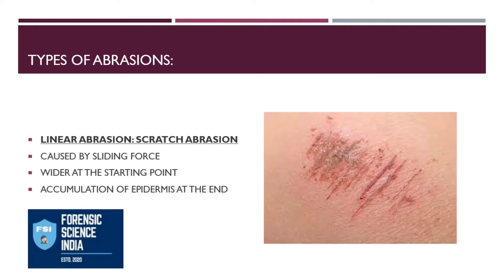Linear abrasions are also known as scratch abrasions. In the same photo from the previous slide there was the presence of graced abrasion as well as scratch or linear abrasion. These are caused by sliding force — whenever two bodies rub against each other it may cause scratching, leading to these abrasions. They are wider at the starting point and narrower towards the ending point, and often there is accumulation of epidermis at the end, a phenomenon also known as heaping of the epidermal layer.